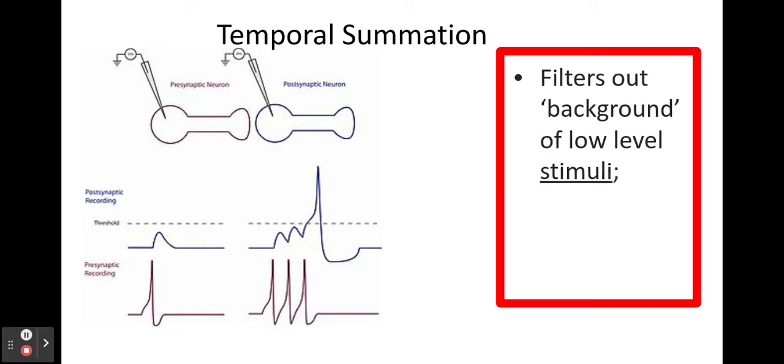And this is really good because it allows you to filter out background or low level stimuli. As you can see in this image, when I've got one stimulus in the presynaptic membrane I haven't released enough neurotransmitter to trigger a postsynaptic depolarisation of that membrane. But in this example, because I've got several stimuli in my presynaptic membrane I've got enough neurotransmitter being released into my synaptic cleft for the threshold value to be reached and an action potential to be established in my postsynaptic membrane.